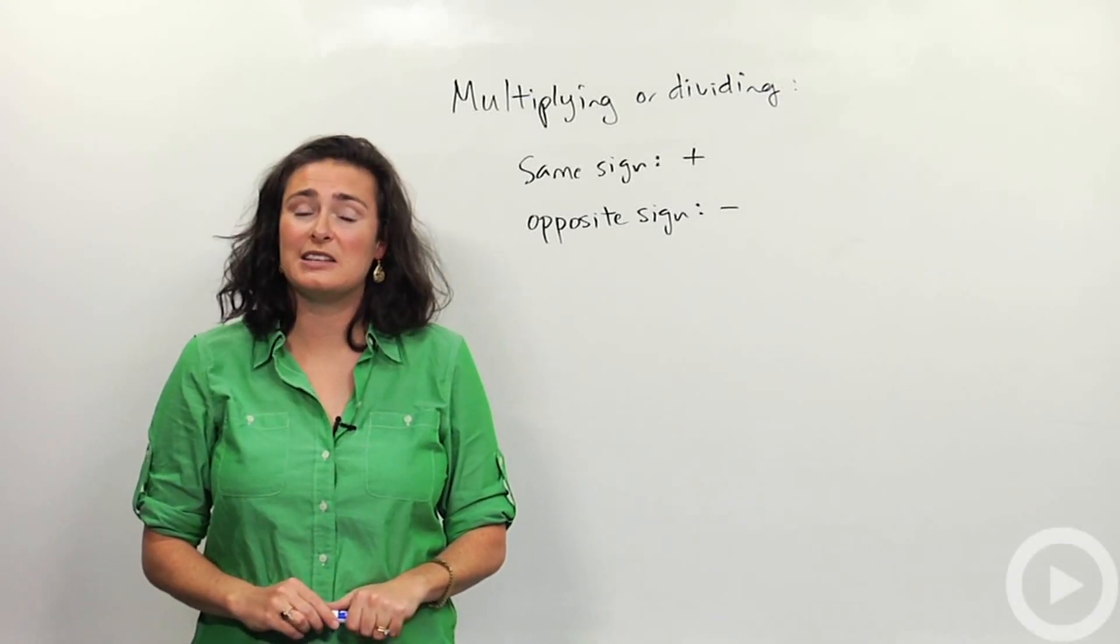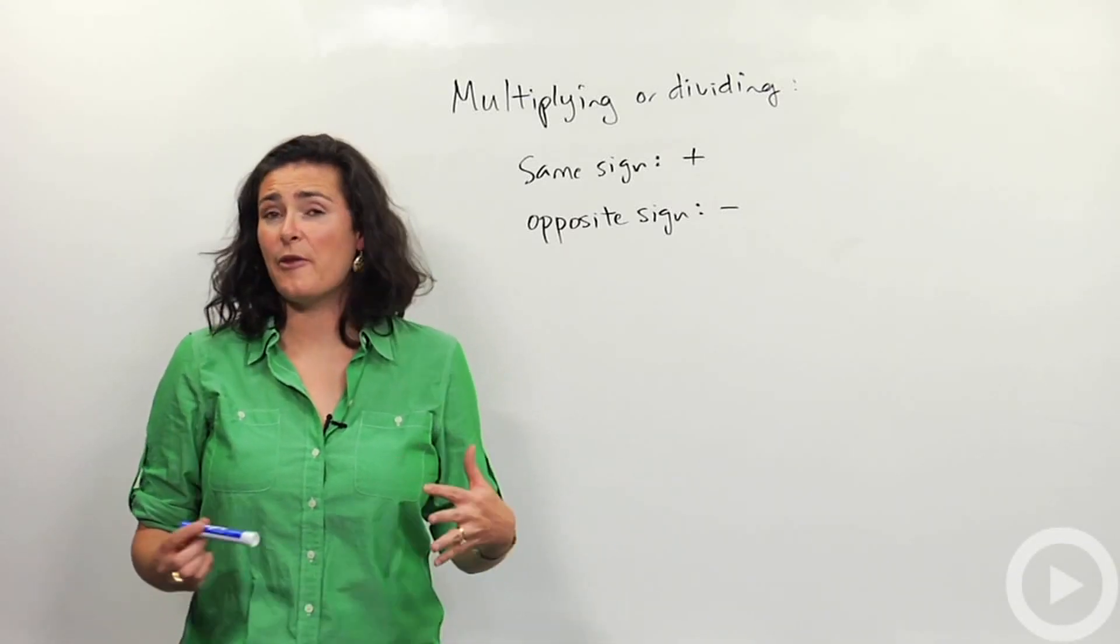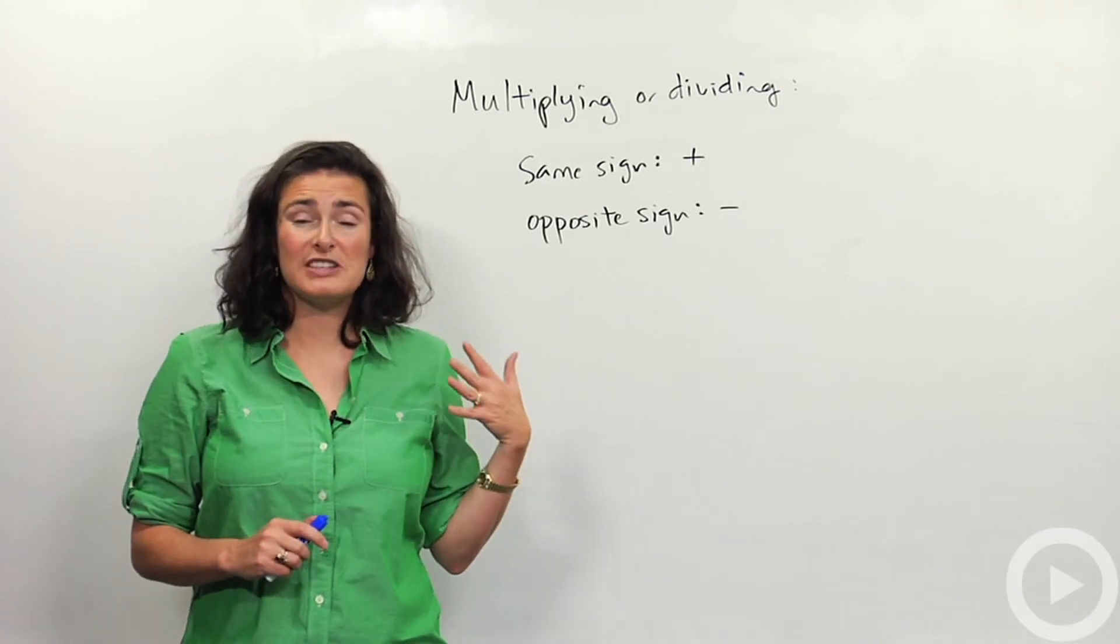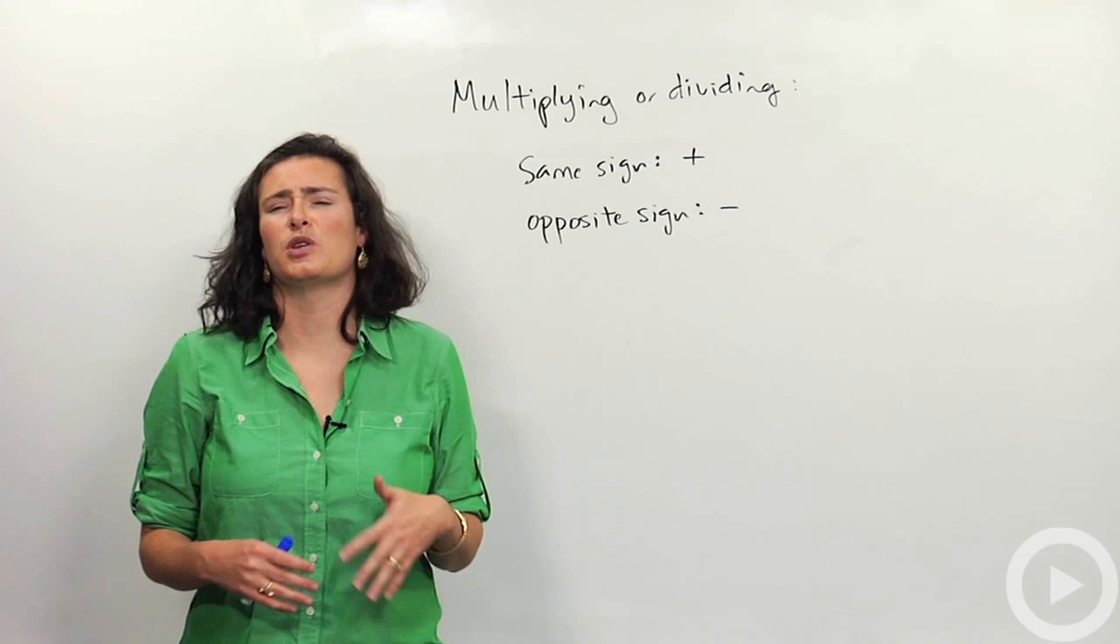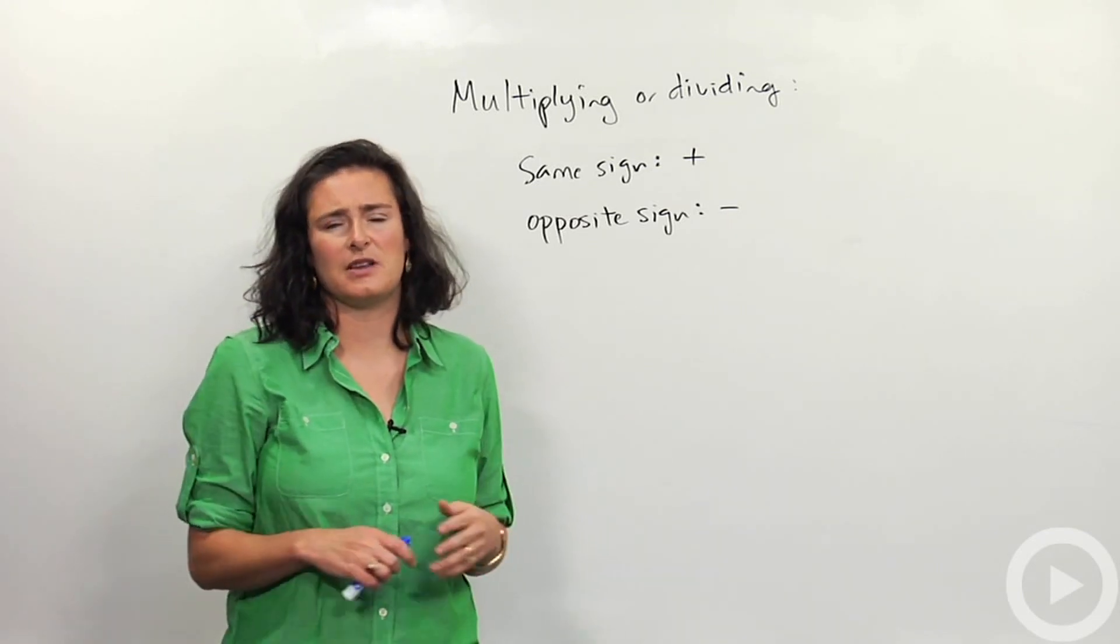We're going to be talking about how to multiply and divide positive and negative numbers. Those are called integers. But these rules we're going to look at will work for any type of numbers, not just integers. So it'll work for fractions and decimals and any types of numbers you come across.